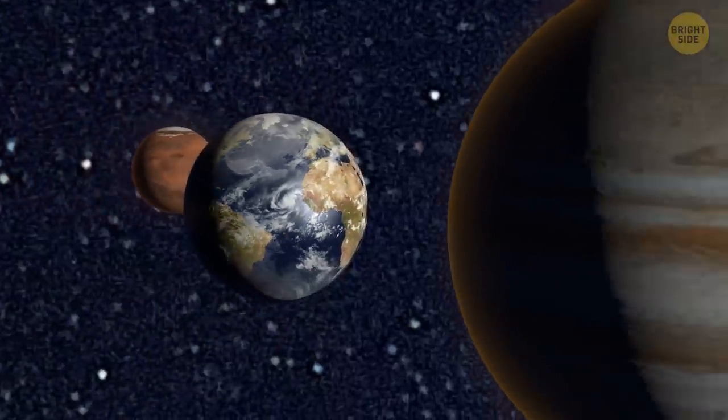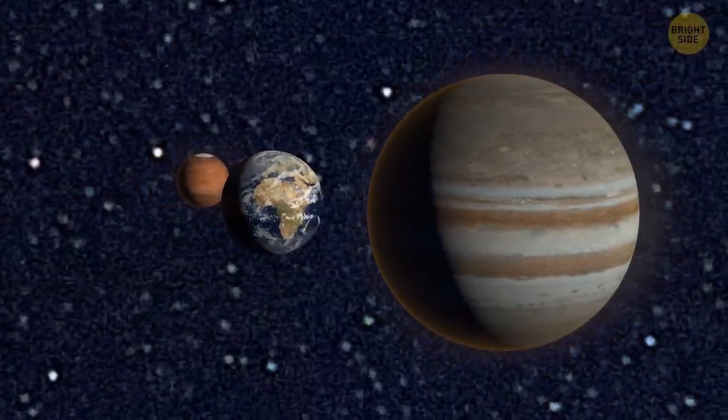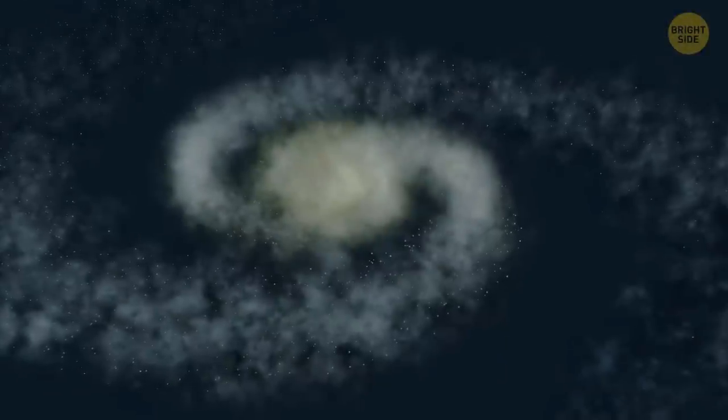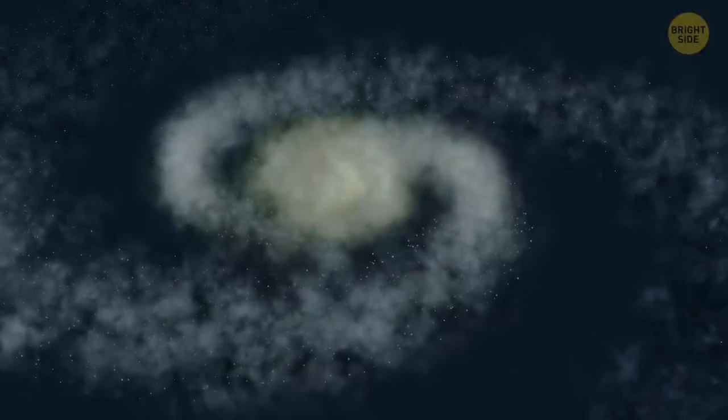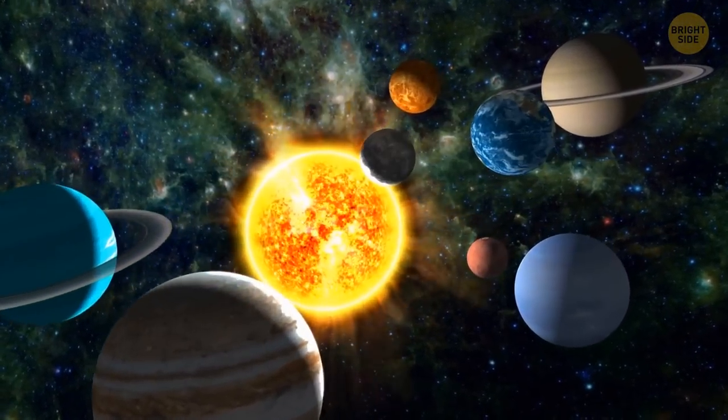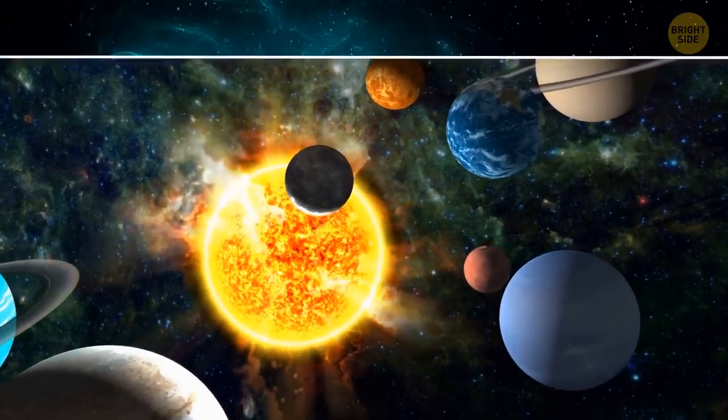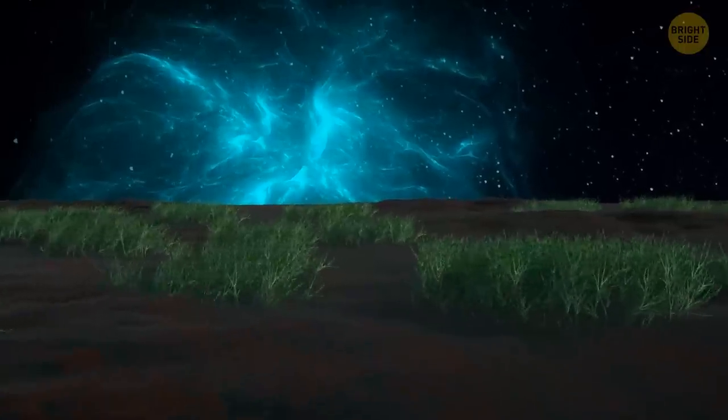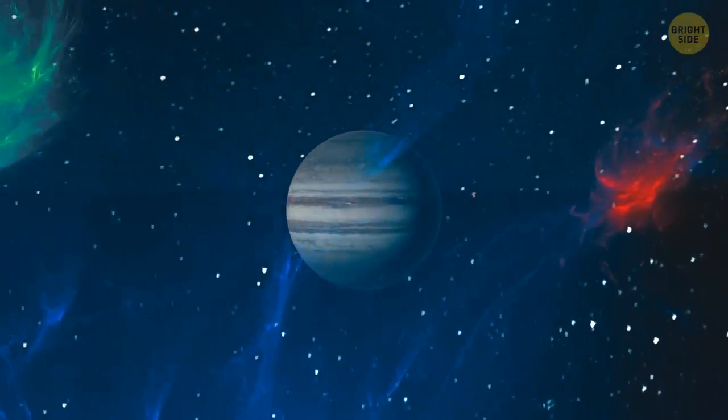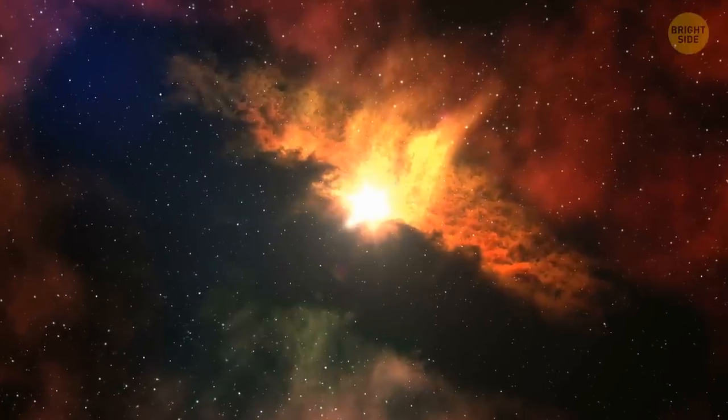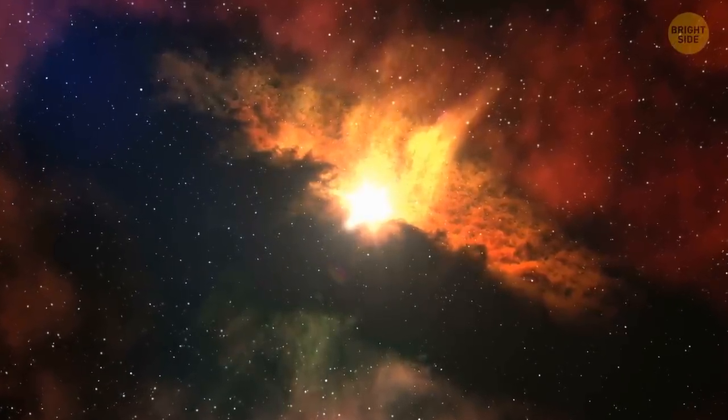Have you ever wondered what it would be like if every planet in our solar system was the size of Earth? Well, it's time to dive into this mind-boggling scenario. Let's imagine what each planet would look like if they were as big as our beloved blue planet. Would the barren red landscape of Mars suddenly become a lush green oasis? Would the massive swirling gas giant Jupiter just disappear? And how would it affect our solar system as a whole? Are we all doomed? Buckle up and let's find out!